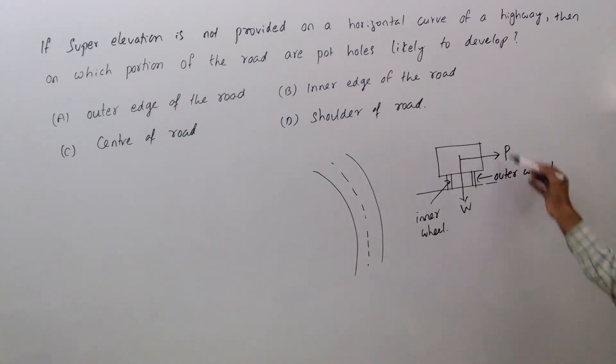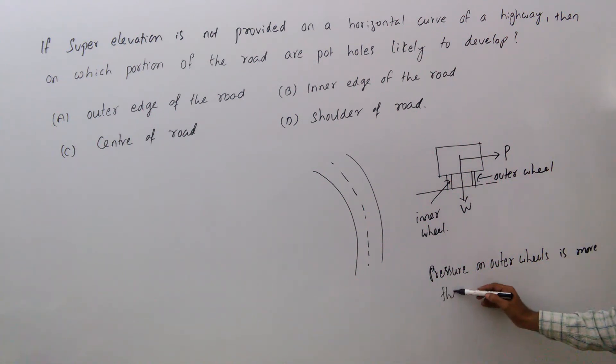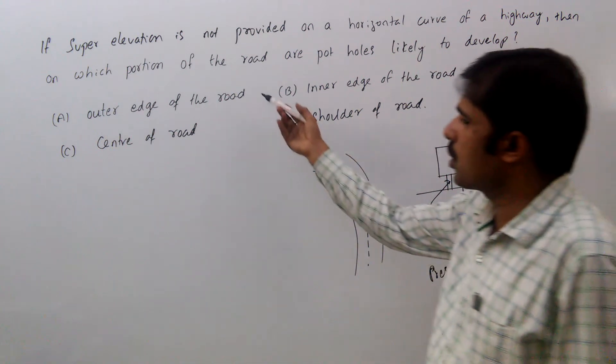Due to this movement, P into height, this moment causes pressure on outer wheels to be more than inner wheels. That's why the outer edge of the road only will get damaged.